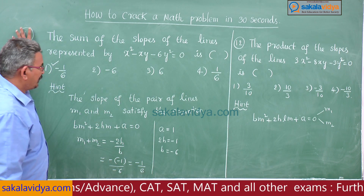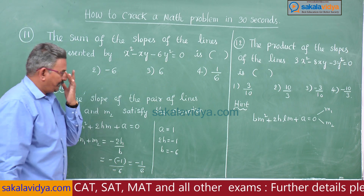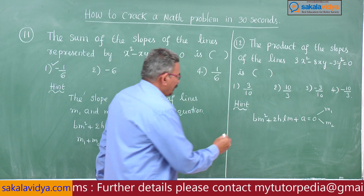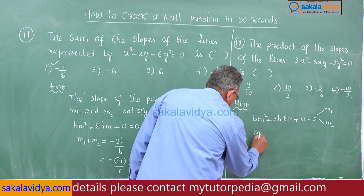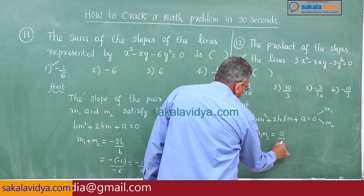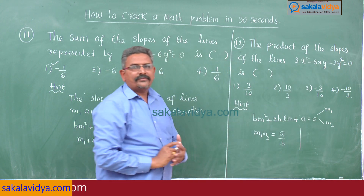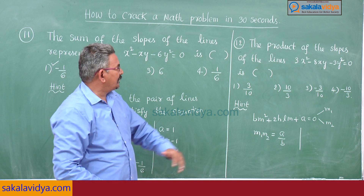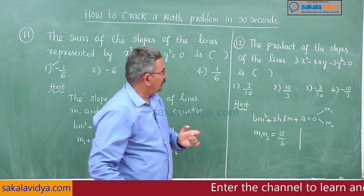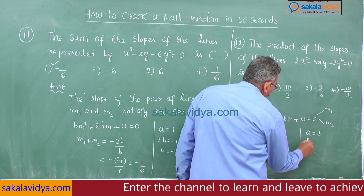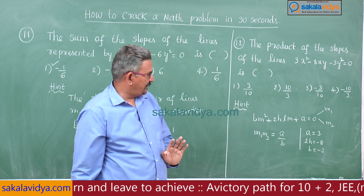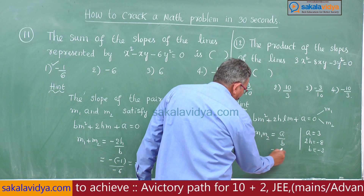You can refer to Problem 11 while solving this. The product of the roots m₁ × m₂ equals the constant term divided by the m² coefficient, that is a/b. Comparing the given equation with ax² + 2hxy + by² = 0, we get a = 3, 2h = -8, and b = -3. So the product of slopes = a/b = 3/(-3) = -1.